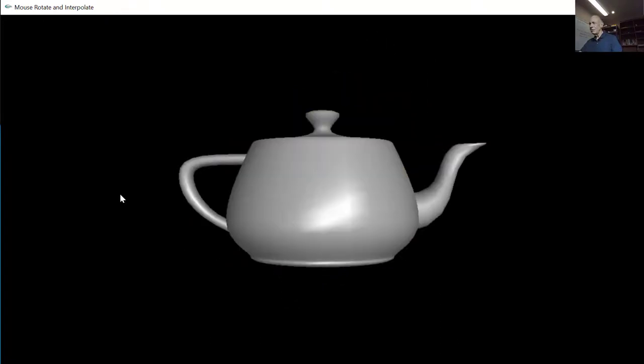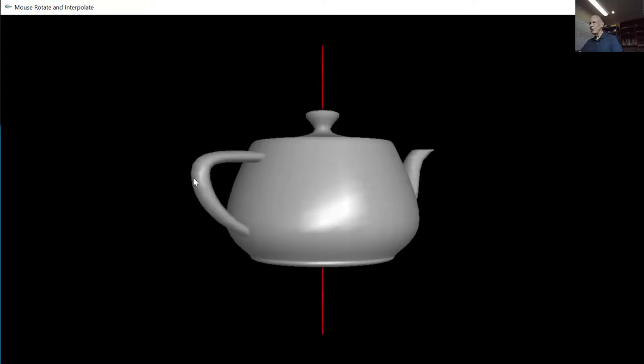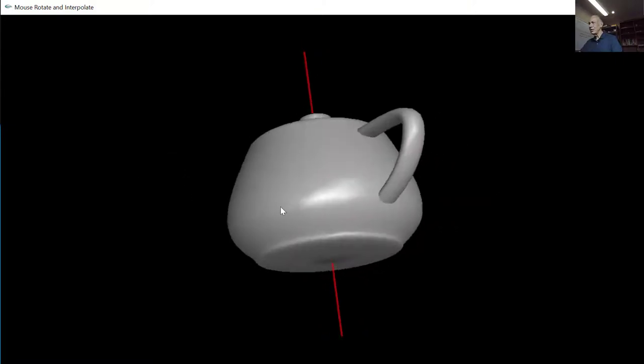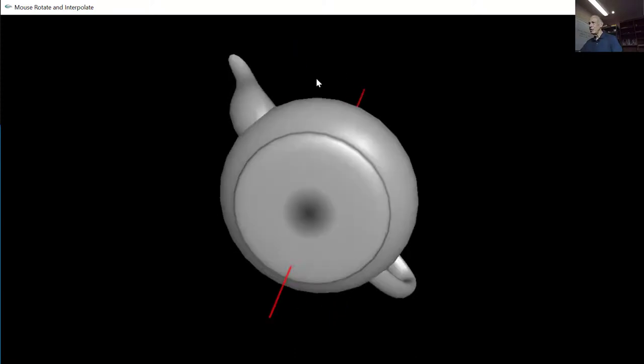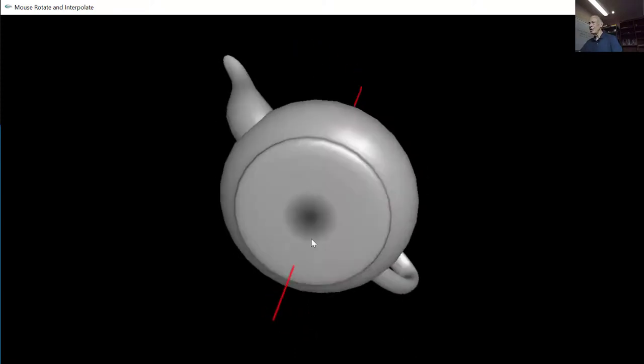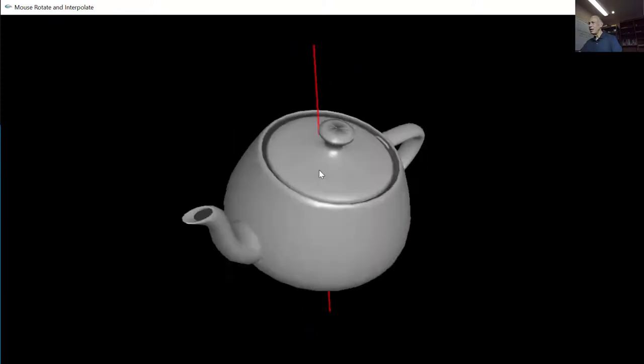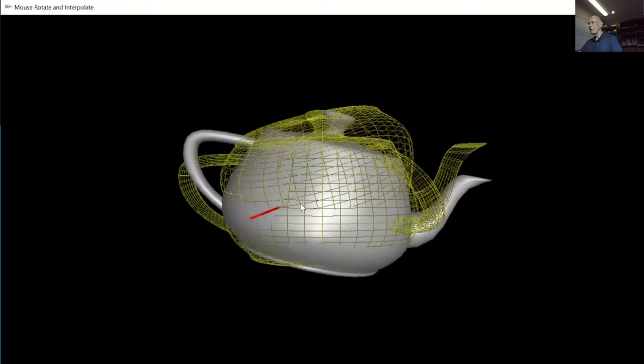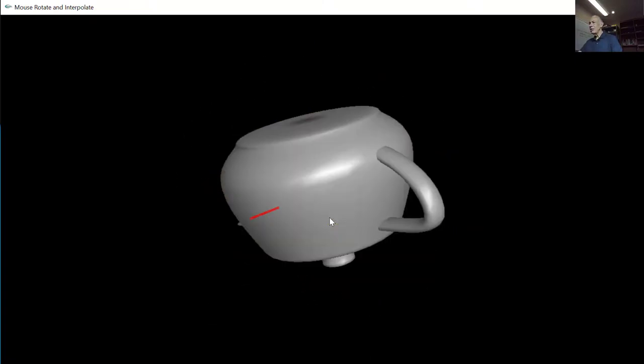You might be wondering here if I've cheated a little bit with this, because here I have the ability to go left and right and rotate around the y-axis, or up and down and rotate around the x-axis. But what about rotating around the z-axis? There's no immediate mouse control that lets us do that.